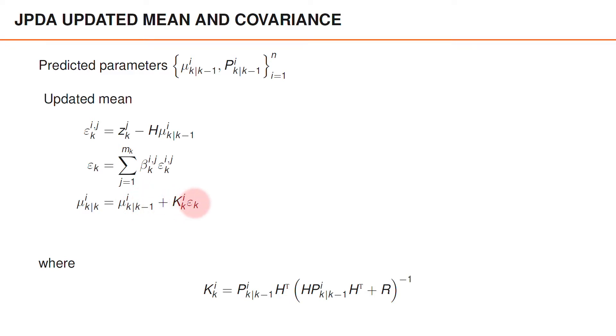You should note that if the marginal probability of no association, beta i0, is very large, or almost equal to 1, then the marginal probabilities for the measurement will be almost 0, because they all have to sum to 1. And then the expected innovation will be a vector where all elements are almost 0. And it then follows that the merged mean is equal, more or less, to the predicted mean. And this is what we expect if the probability of no association is very high.